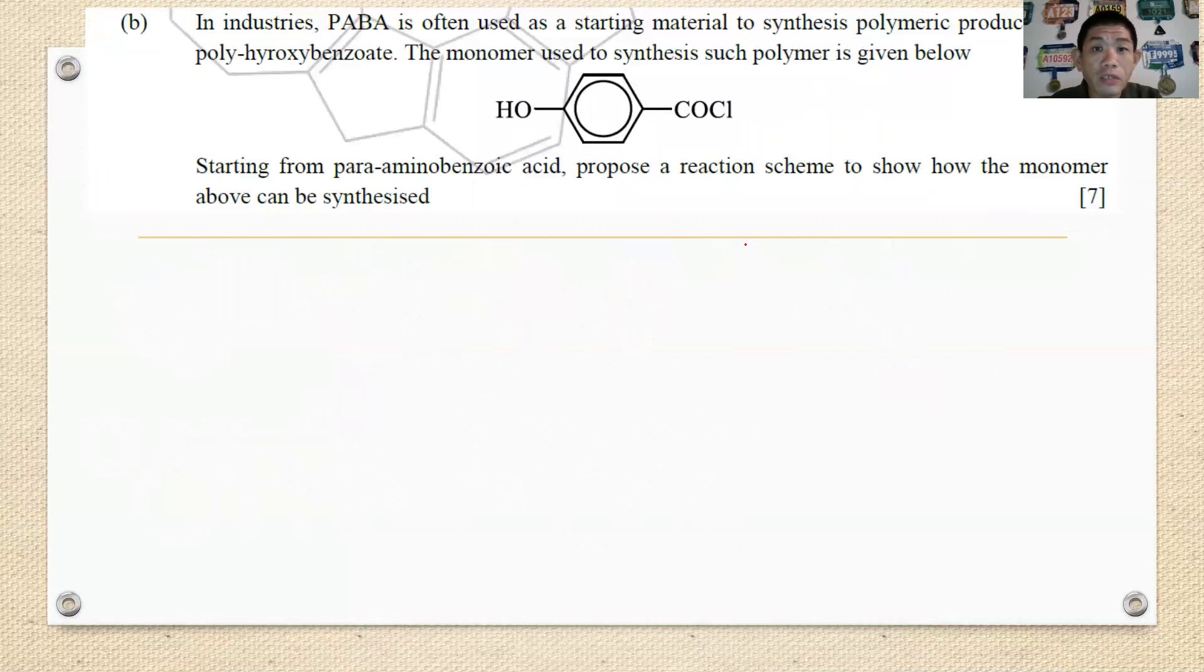Then it goes for 3B. In industry PABA is often used as a starting material to synthesize polymeric products such as polyhydroxybenzoate. The monomer used to synthesize such polymer is given below. Starting from para amino benzoic acid, propose a reaction scheme to synthesize this polyhydroxybenzoate monomer. How are you going from starting from PABA to become COCL? First of all, I usually will advise you all to start with the reduction. The reduction here only involves NO2 because in this case we are not using a strong reducing agent such as LiAlH4, so our COOH will not be affected. Only NO2 are able to form NH2.